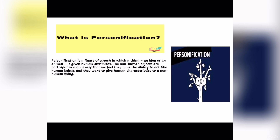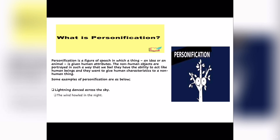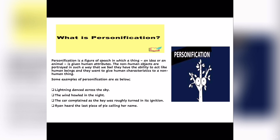Some examples of personification are as below. Number 1: lightning danced across the sky. Number 2: the wind howled in the night. Number 3: the car complained as the key was roughly turned in its ignition. Number 4: Ryan heard the last piece of pie calling her name. Number 5: the children cautiously entered the yawning cave. All of these non-living things are given human qualities, which is personification.